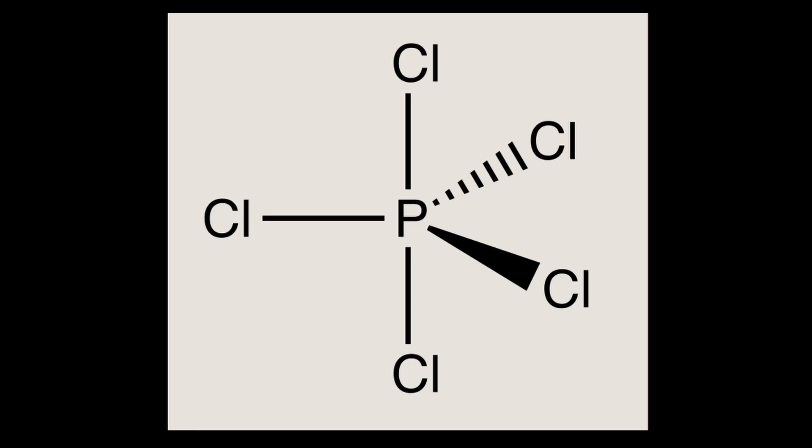But also, why only 10 electrons for phosphorus in phosphorus pentachloride, but 12 for sulfur and silicon in their compounds? Very simply, the octet rule has failed us.